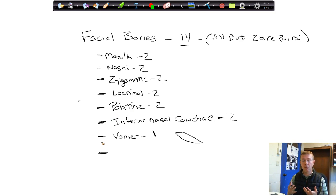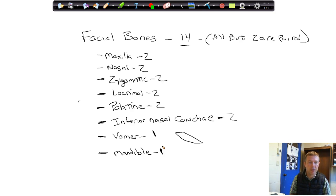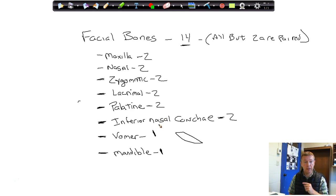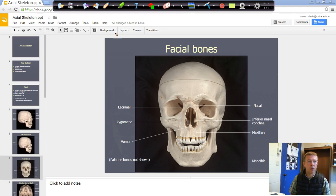The last facial bone, which many people don't initially think of as a facial bone, is your mandible — your jawbone. It is also a single unpaired bone and makes up the rest of your face. So to review: the maxillary bone, the nasal bones, the zygomatic bone making up your cheeks, the lacrimal bones at the medial corner of your eye, the palatine bone at the posterior portion of the roof of your mouth, the inferior nasal conchae inside your nose, the vomer down the middle of your nasal cavity, and the mandible — your jawbone. Let's take a look at where all of these sit.